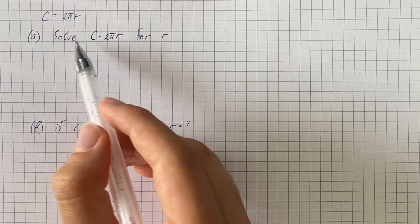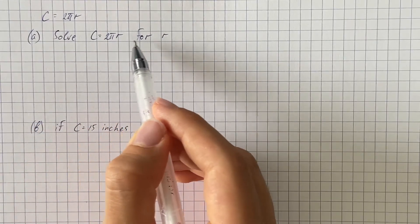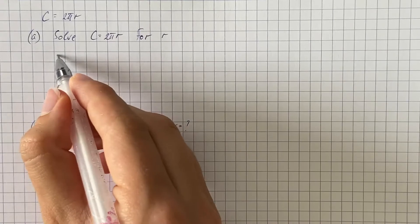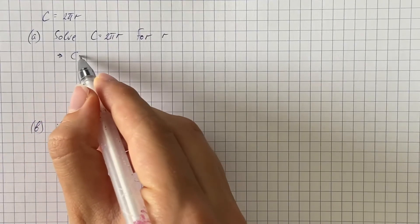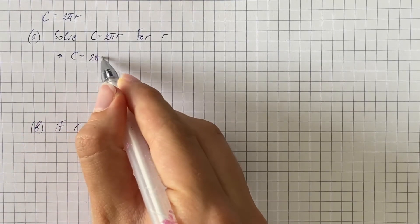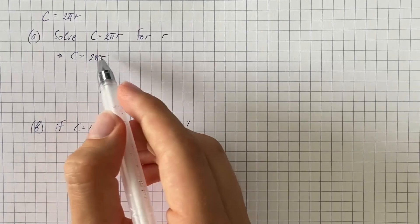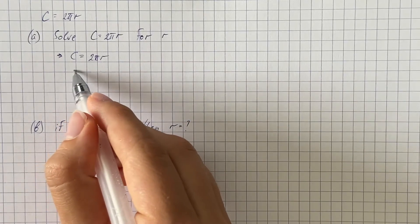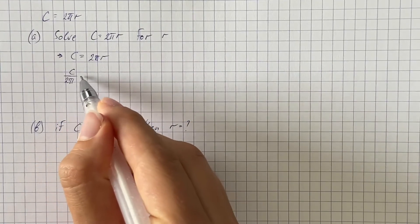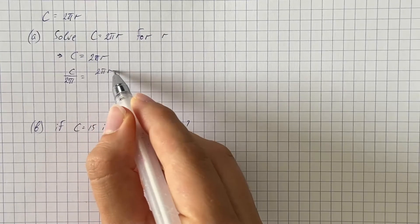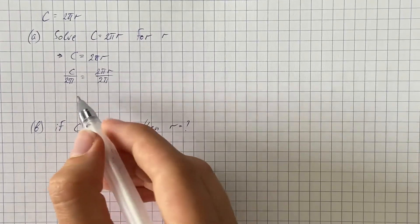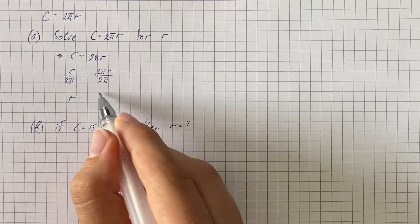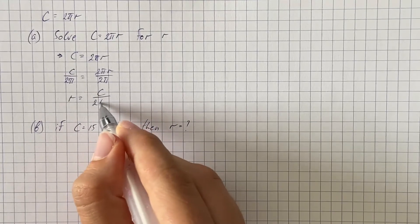So at first we have to solve c equals 2 pi r for r. Therefore we get c equals 2 times pi times r, and we're gonna divide both sides by 2 pi.